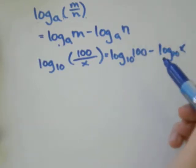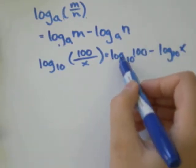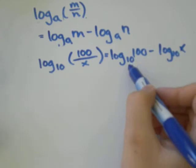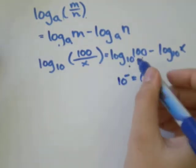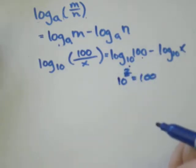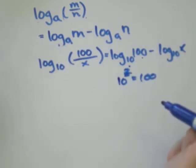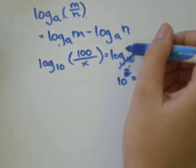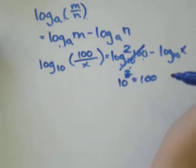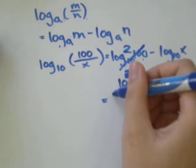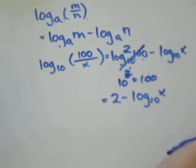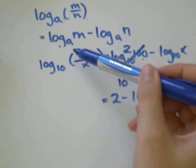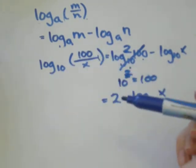Log base 10 of 100, what that means is the exponent you put on 10 to make 100. 10 to the power of something equals 100. Well, 10 to the power of 2 is equal to 100. So we could replace log base 10 of 100 with 2, and we would get 2 minus log base 10 of x, which is equivalent to log base 10 of 100 over x.